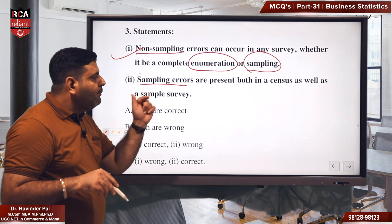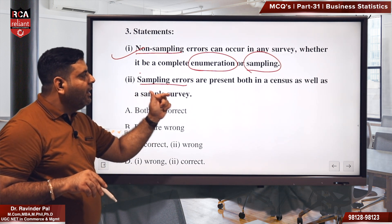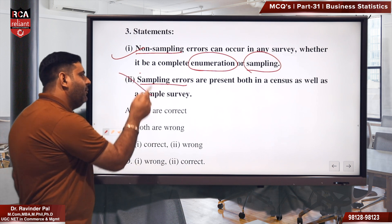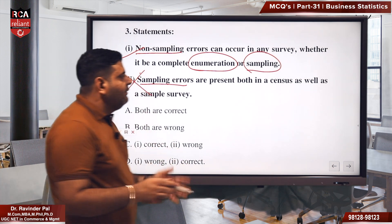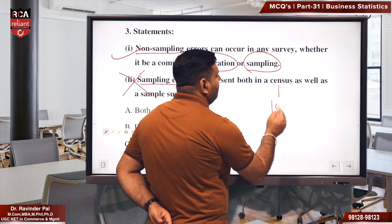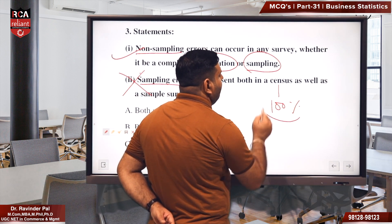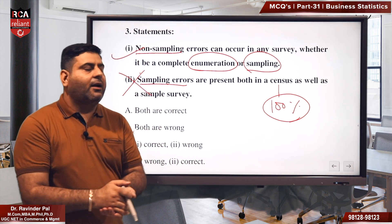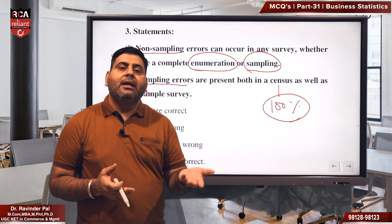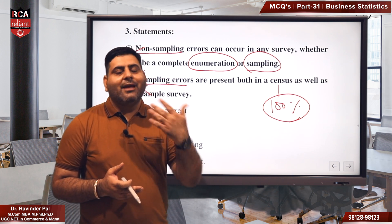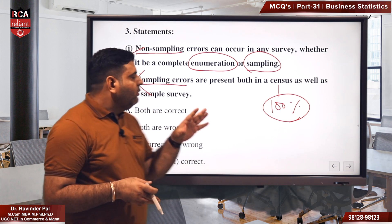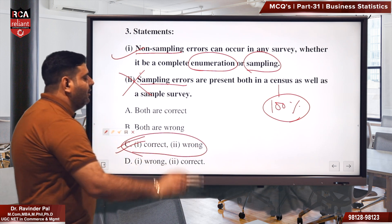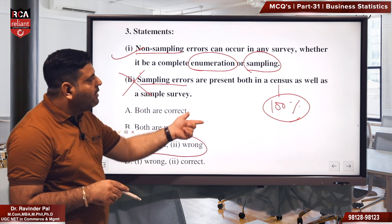Now statement two talks about sampling error occurring in both census as well as sample surveys. This is incorrect. When you conduct a census survey, that covers each and every respondent — 100% data. When we are not taking a sample at all, where would sampling error come from? So the right answer is C: the first statement is correct and the second one is wrong.